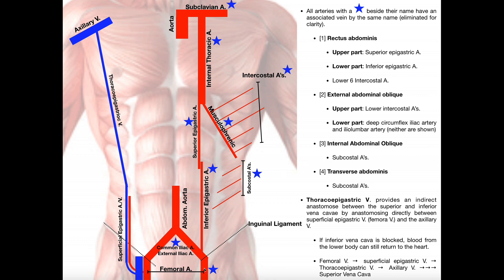Let's consider the patient's left for just a minute. We have the common iliac artery, which is going to bifurcate itself into two arteries. One is going to be the external iliac artery, and the other is the internal iliac artery. For the sake of clarity, I've omitted the internal iliac artery here. So for this diagonal artery shown, the first half of it is the common iliac artery and the second half is the external iliac artery.